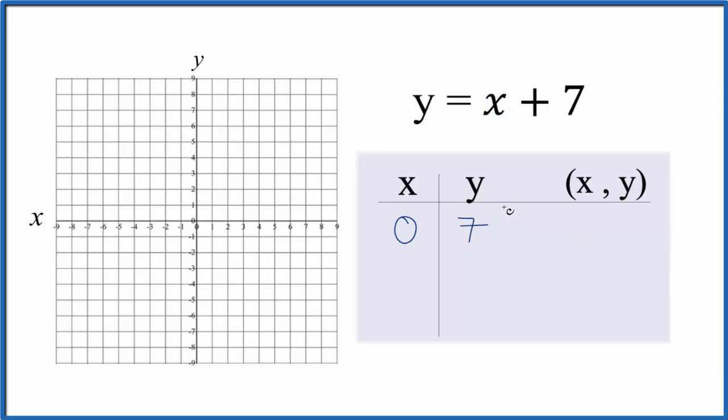Let's start with 0. If x is 0, 0 + 7 is 7. Why don't we put -1 in? If x is -1, -1 + 7 gives us 6. How about -2? -2 + 7 gives us 5. I could choose any values for x, but these ones fit nicely on our graph.